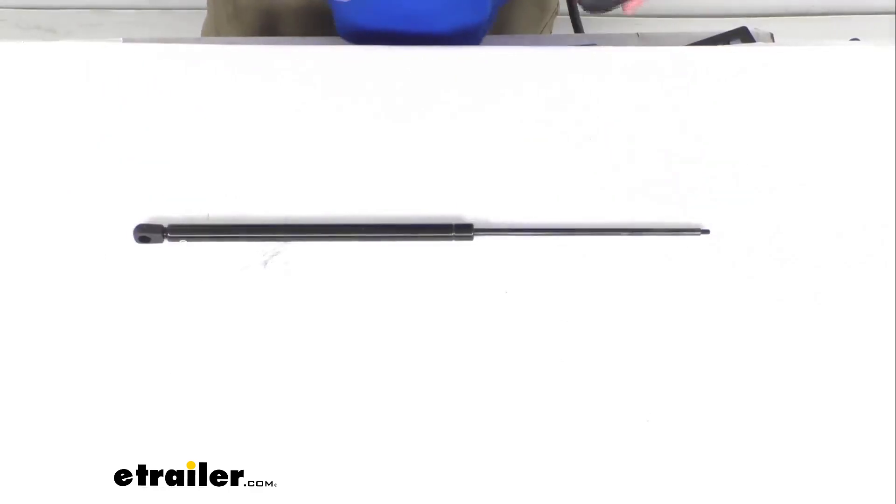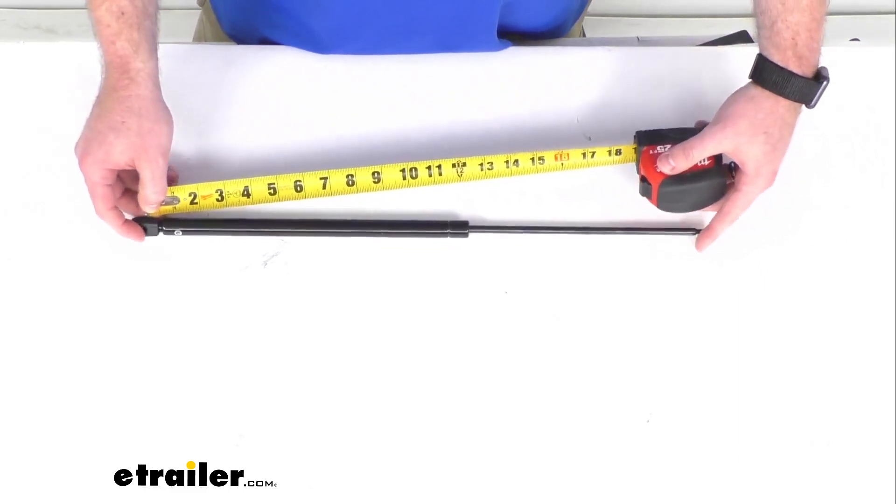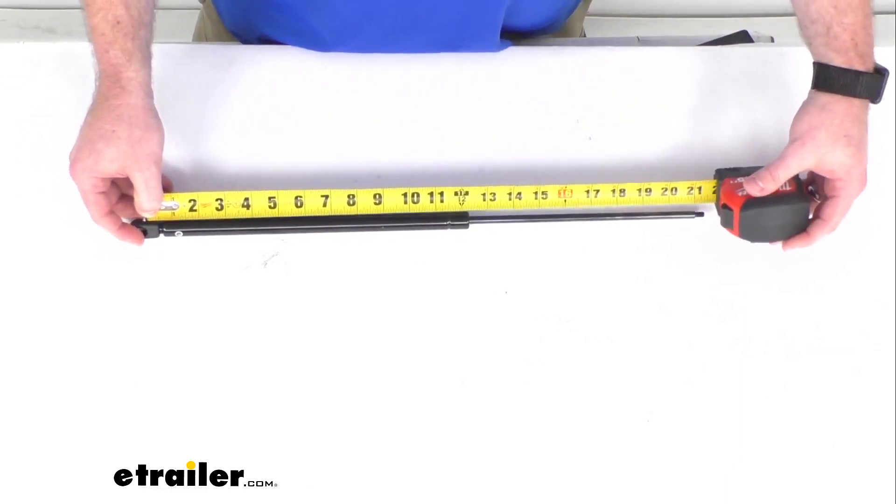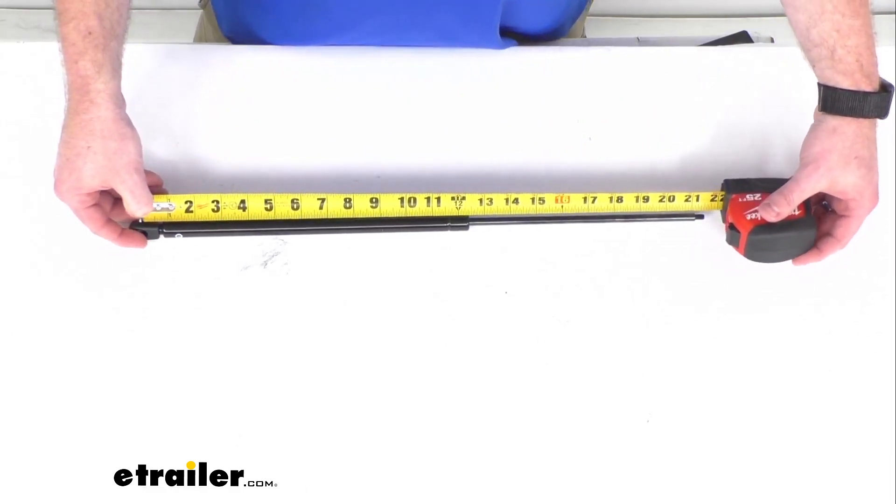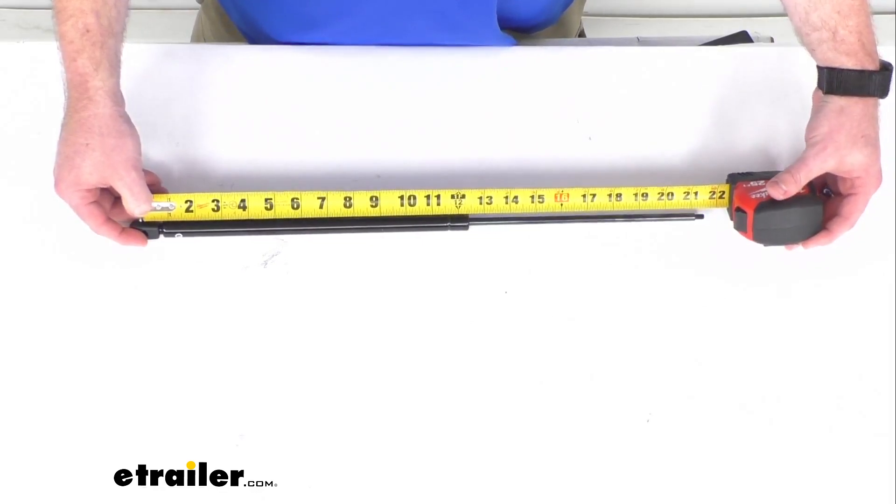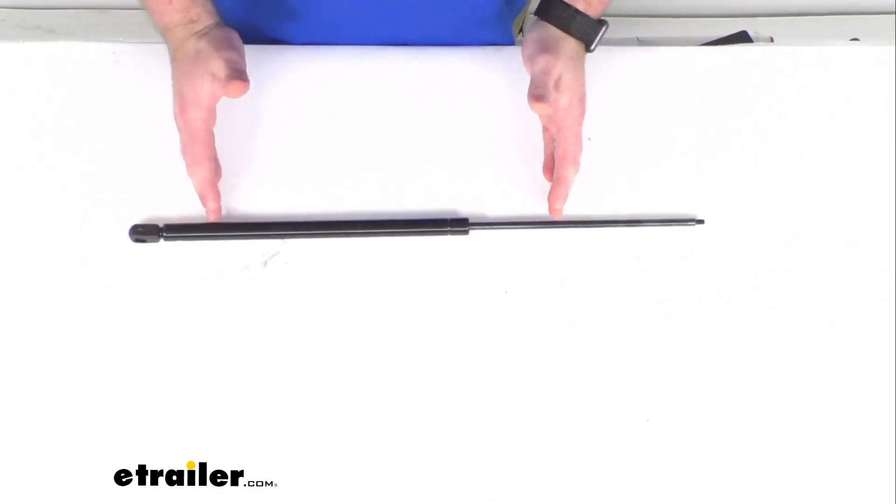When we have it extended like this, from the center of our ball socket to the beginning of that threaded portion, not counting the threaded portion itself, we are sitting at about 21 and a quarter of an inch. When we have this compressed, it'll go down to 12 and a half inches.